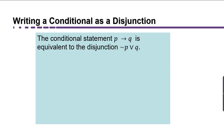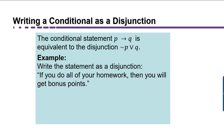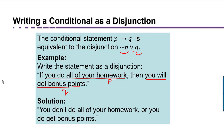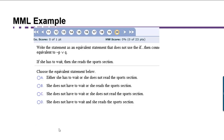We can also use the fact that the conditional is equivalent to not P or Q in order to rewrite a statement from if-then form as an or statement. For example, 'if you do all your homework, then you will get bonus points.' Let's rewrite that as an equivalent statement with an OR in it. Here P is 'you do all your homework' and Q is 'you will get bonus points,' so not P is 'you don't do all your homework.' The equivalent statement is: 'Either you don't do all of your homework or you will get bonus points.'